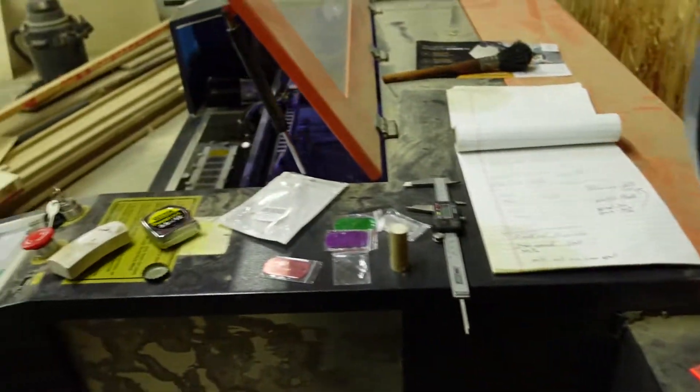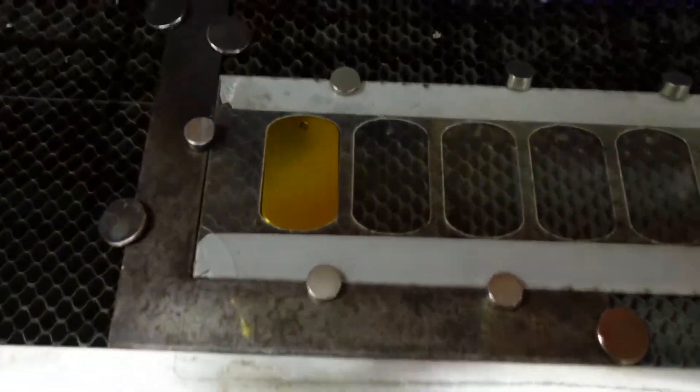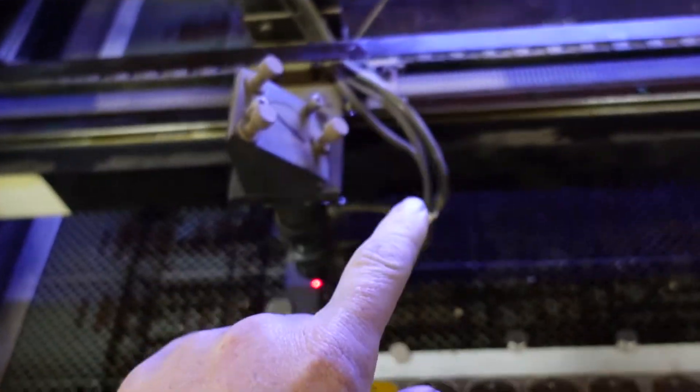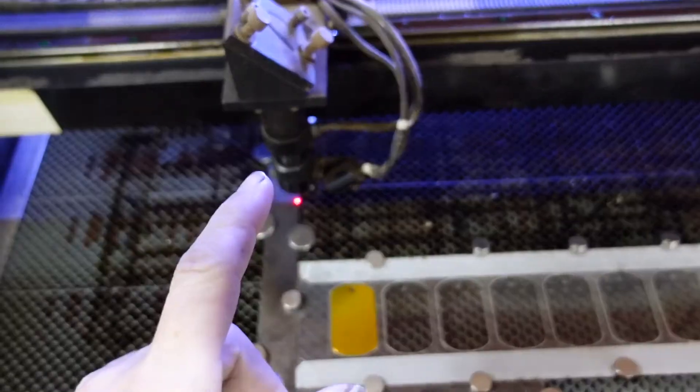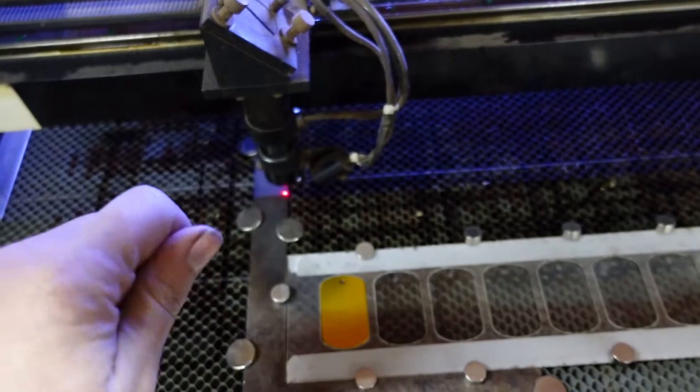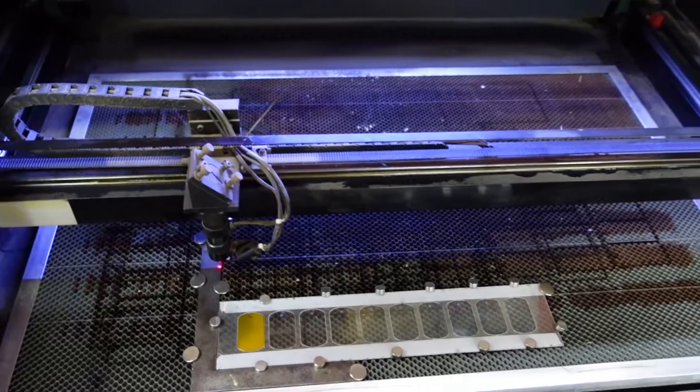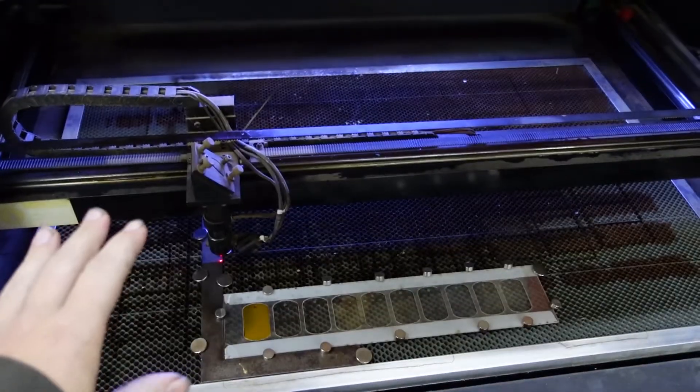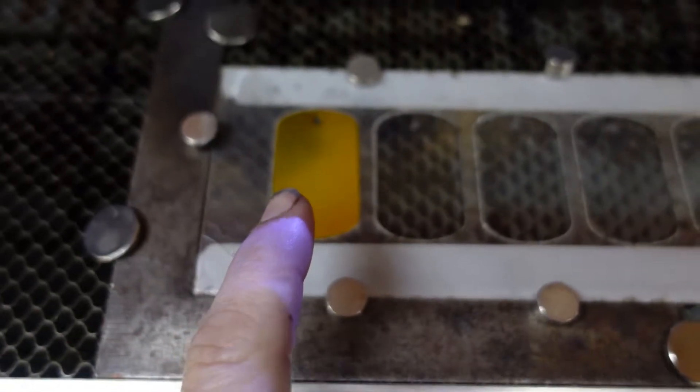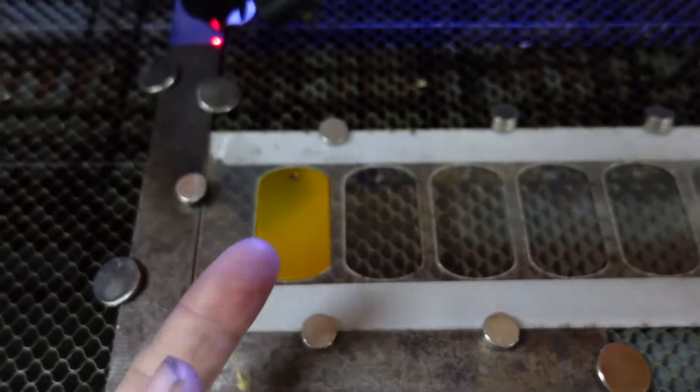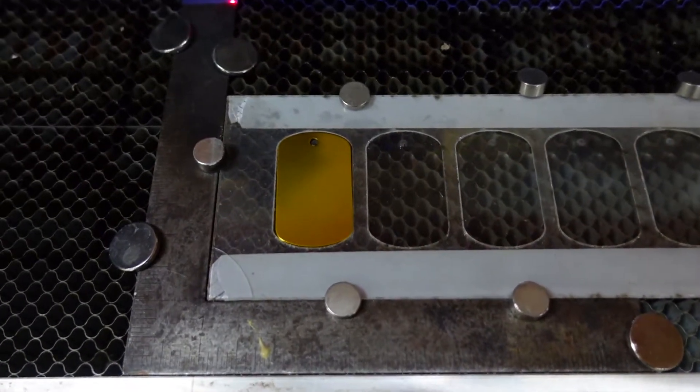This is an 80 watt CO2 laser engraver. One thing to note on the dog tags: if you have an air assist going in, which most engravers do, you will either want to turn your air assist way down or just turn it off completely. I don't have an adjustment valve on this particular engraver so I just turned off my pump. If you leave the pump on or too high you'll actually blow the dog tag around and it'll jump around and you'll get a really fuzzy image. Just a little note there for you.